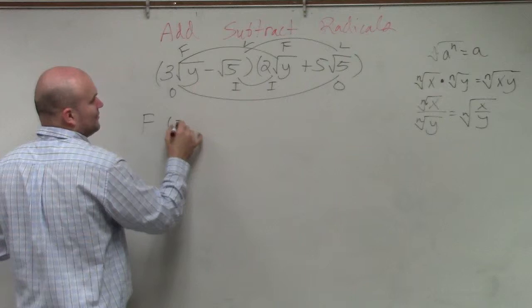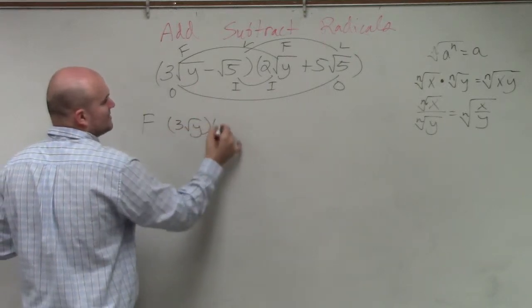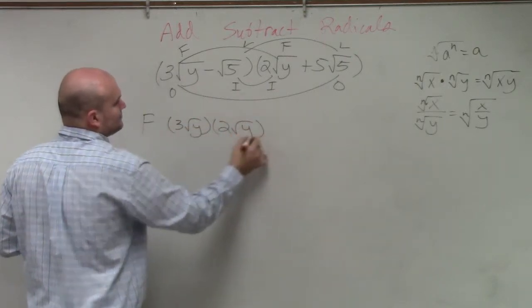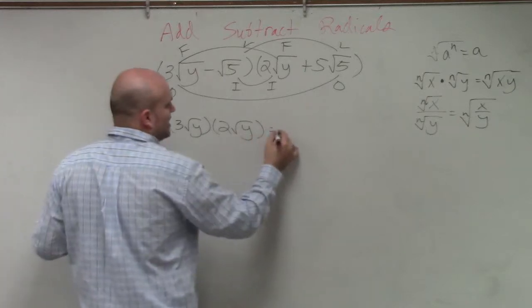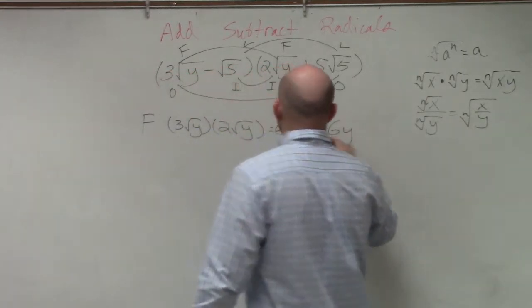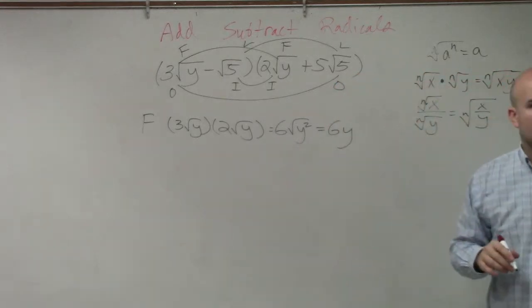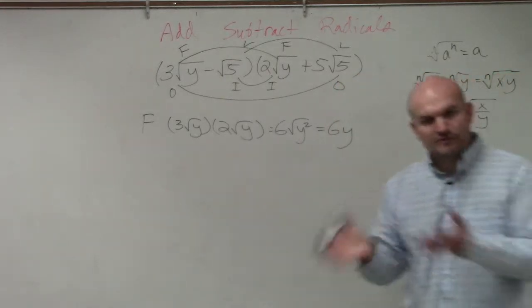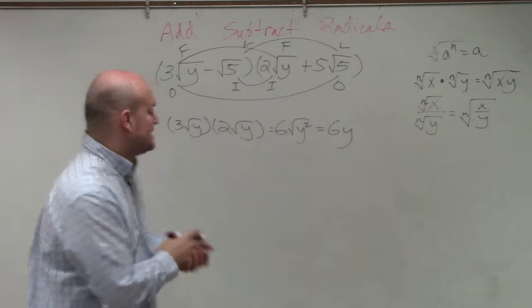which would be 3 square root of y times 2 square root of y. Well, that becomes 6 square root of y squared, which is just 6y. Does everybody agree with me on that? OK? So you're basically just doing each operation separately.